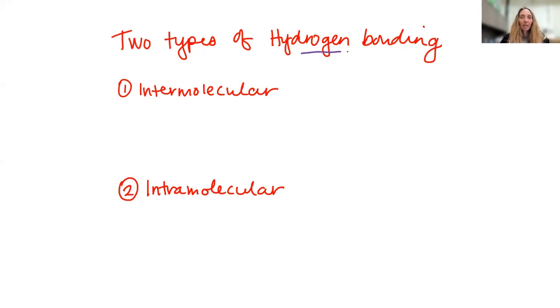Two types of hydrogen bonding. Remember, hydrogen bonding occurs when you have a hydrogen that is covalently bound to an oxygen, a fluorine, or a nitrogen. Those types of hydrogens can participate in hydrogen bonding. The two types available are intermolecular and intramolecular.